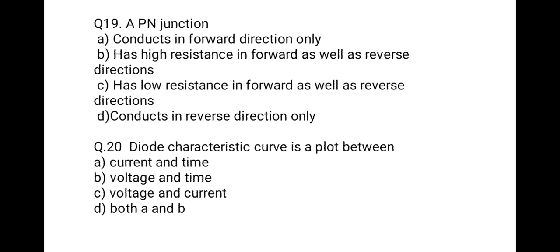The next question is: a PN junction — option one: conducts in forward direction only; option two: has high resistance in forward as well as reverse direction; option three: has low resistance in forward as well as reverse direction; option four: conducts in reverse direction only. The correct option is that it conducts in forward direction only, meaning PN junction is a unidirectional device.